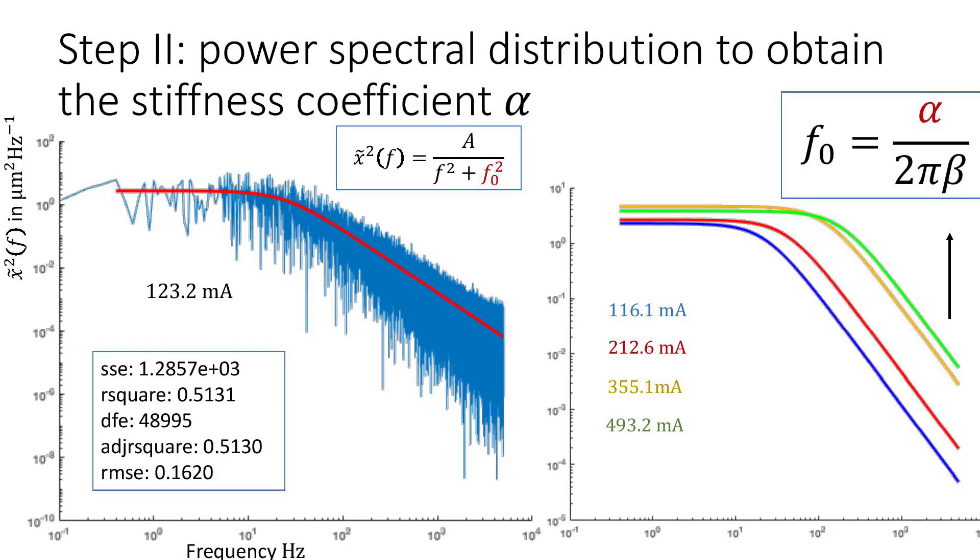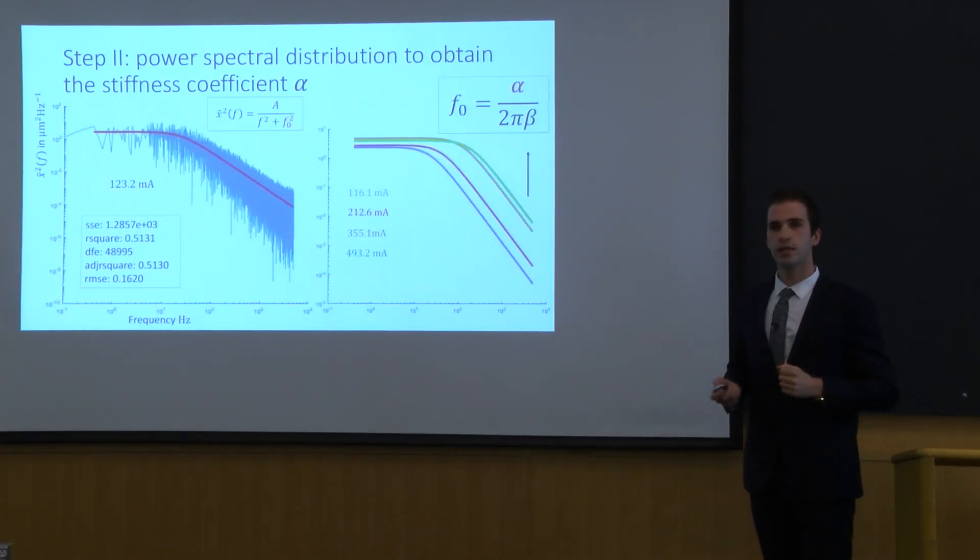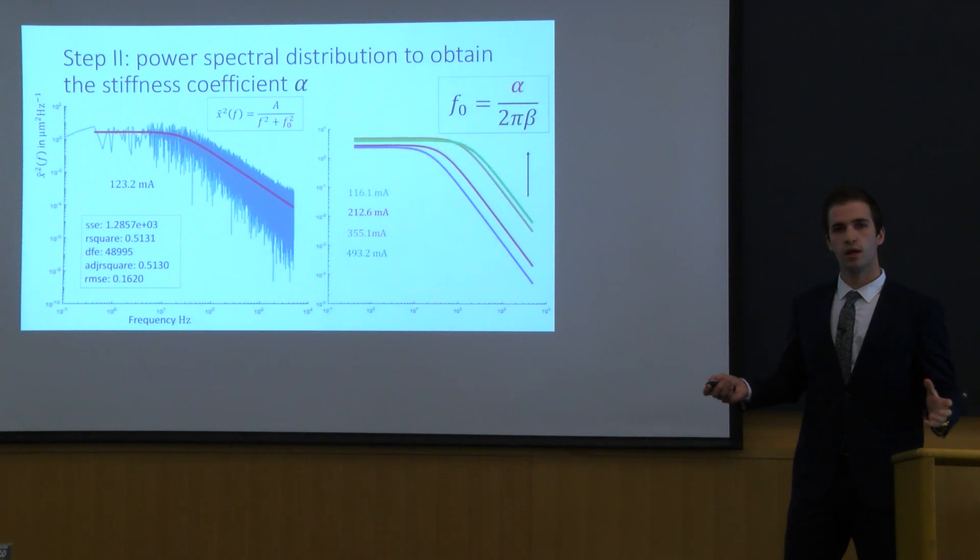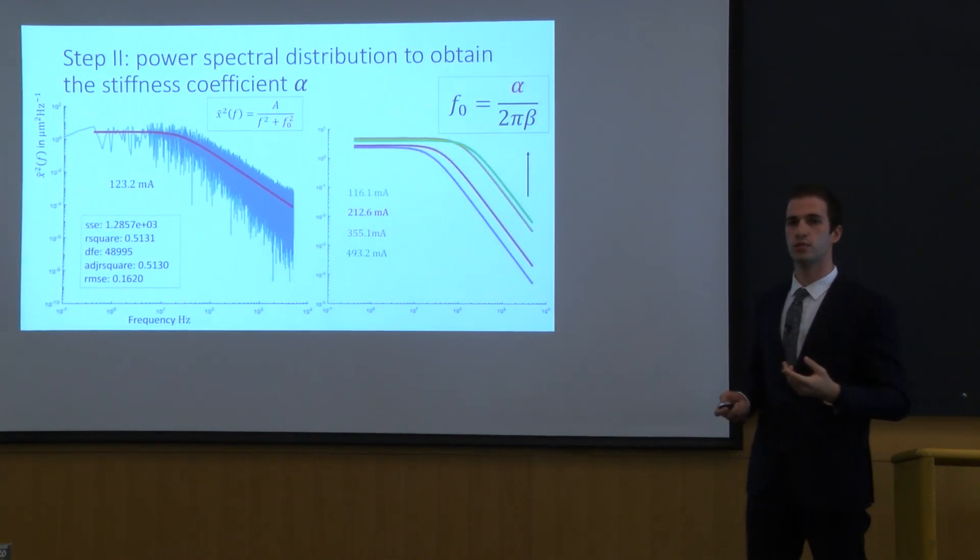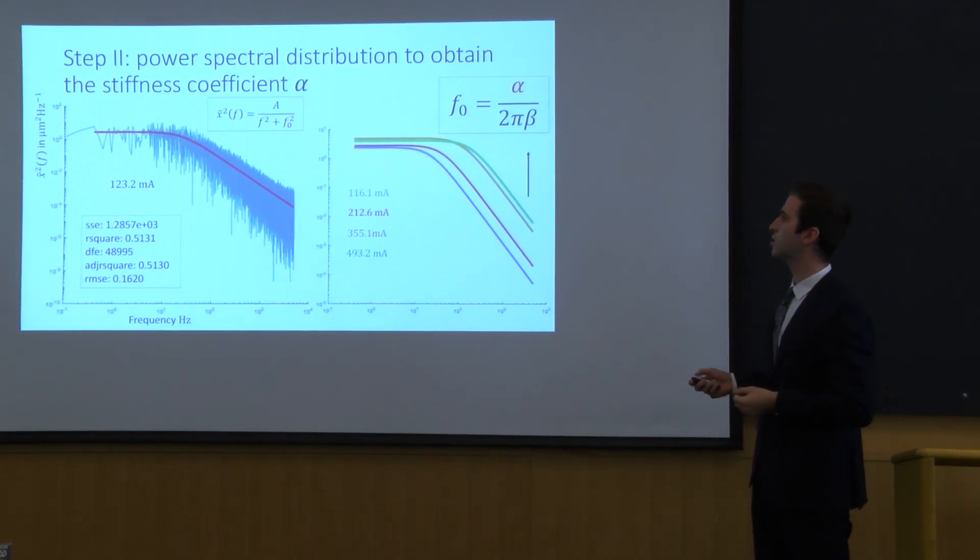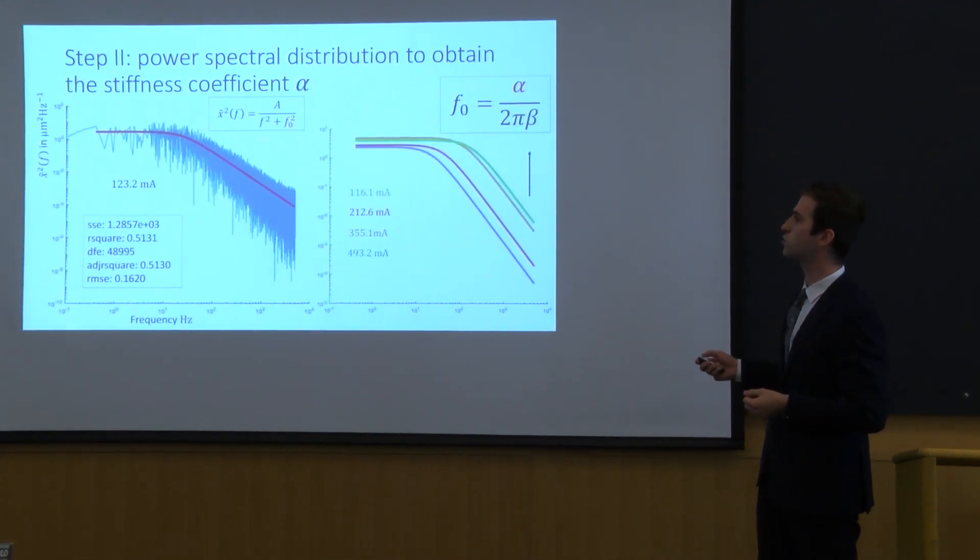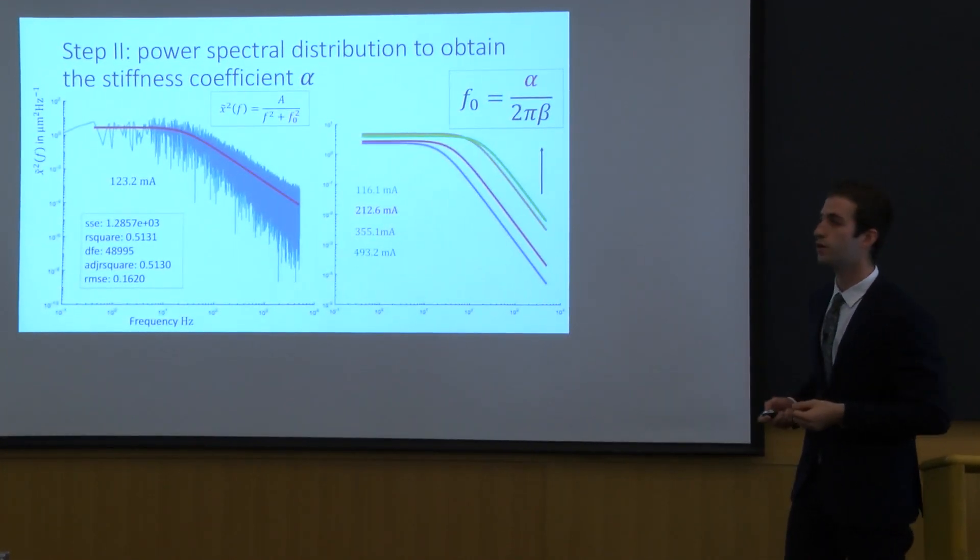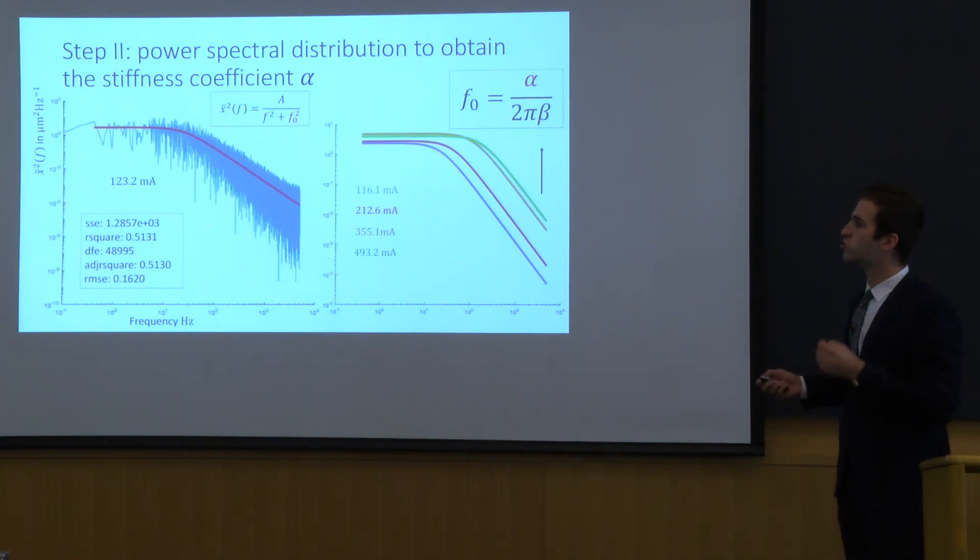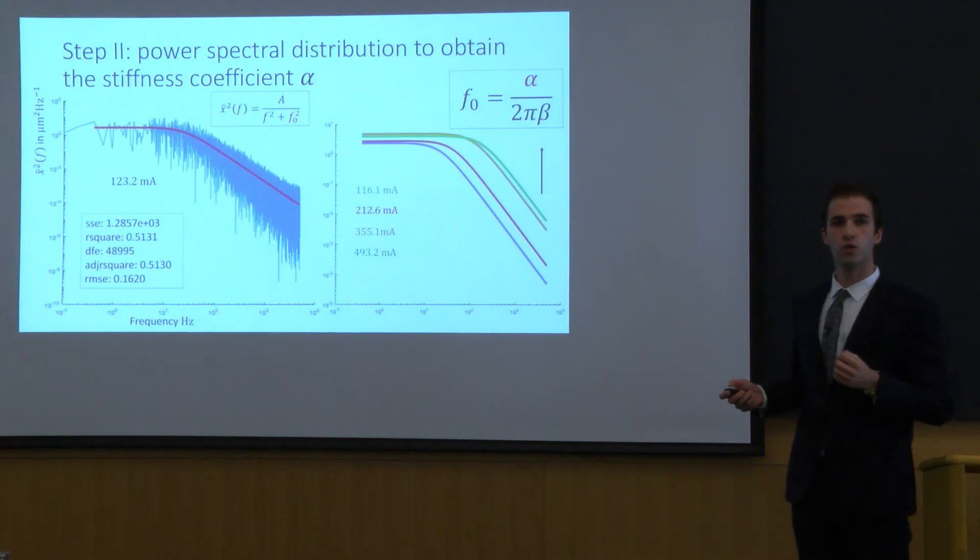The second step is to start getting the components that we need in order to extract KB. It's to measure the stiffness coefficient alpha. Now the main idea is to take the equation of motion and to make a Fourier transform in order to get the positions in terms of frequencies. There is mathematics behind this and essentially the power spectral distribution and that's the distribution of this motion here that we expect obtains this form here from where we can extract the characteristic frequency F0 and F0 gives us alpha which is what we really need.